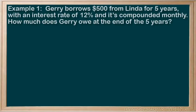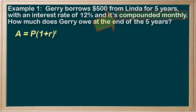Example 1 — a somewhat familiar situation. Jerry borrows $500 from Linda for five years with an interest rate of 12%, compounded monthly. How much does Jerry owe at the end of the five years? Using our original equation, A equals P(1 plus r) to the t, we identify that the compounding period is one month, since we're told it's compounded monthly.